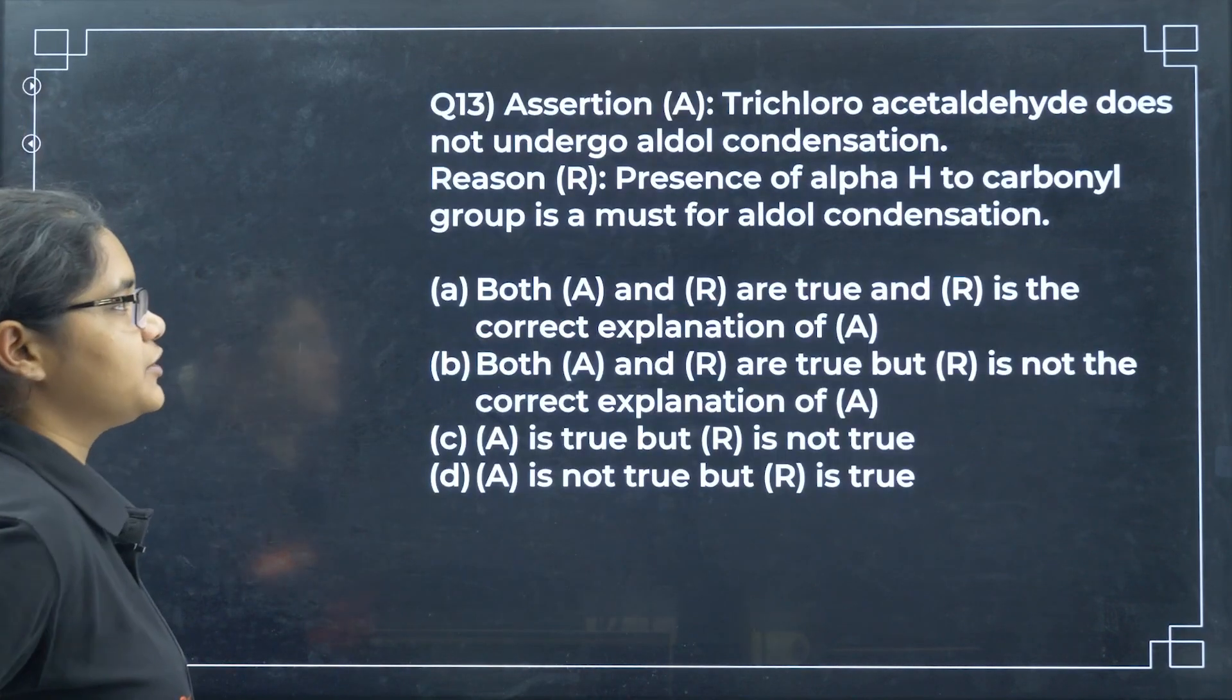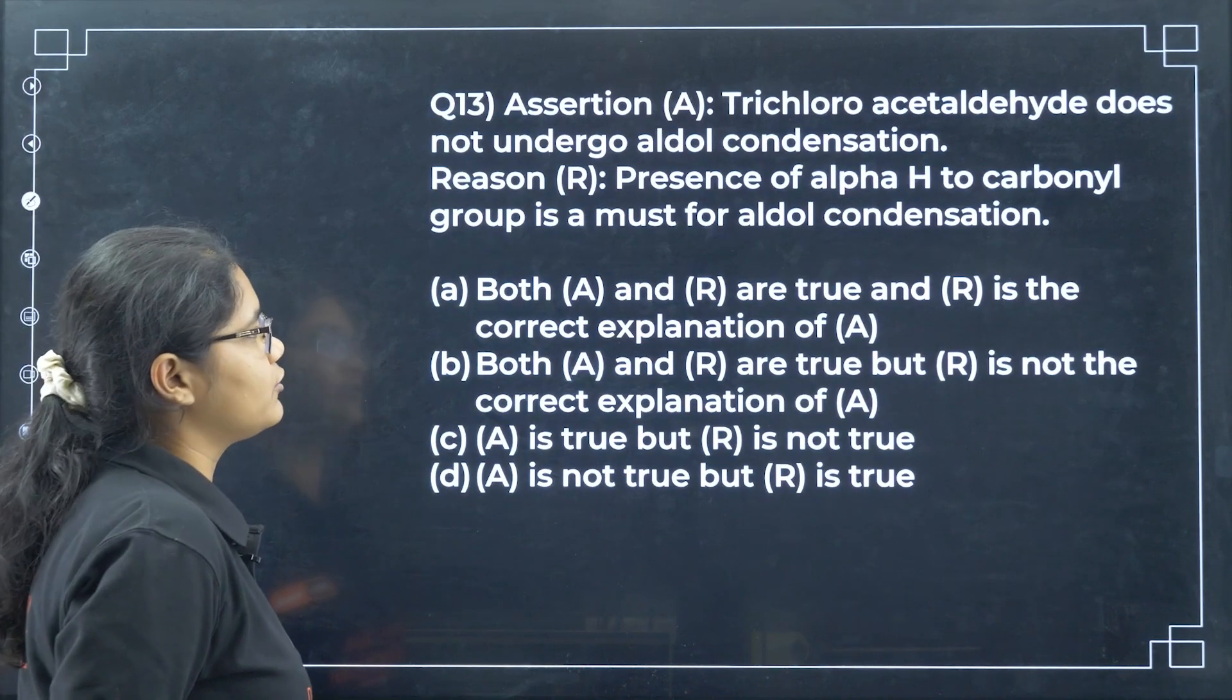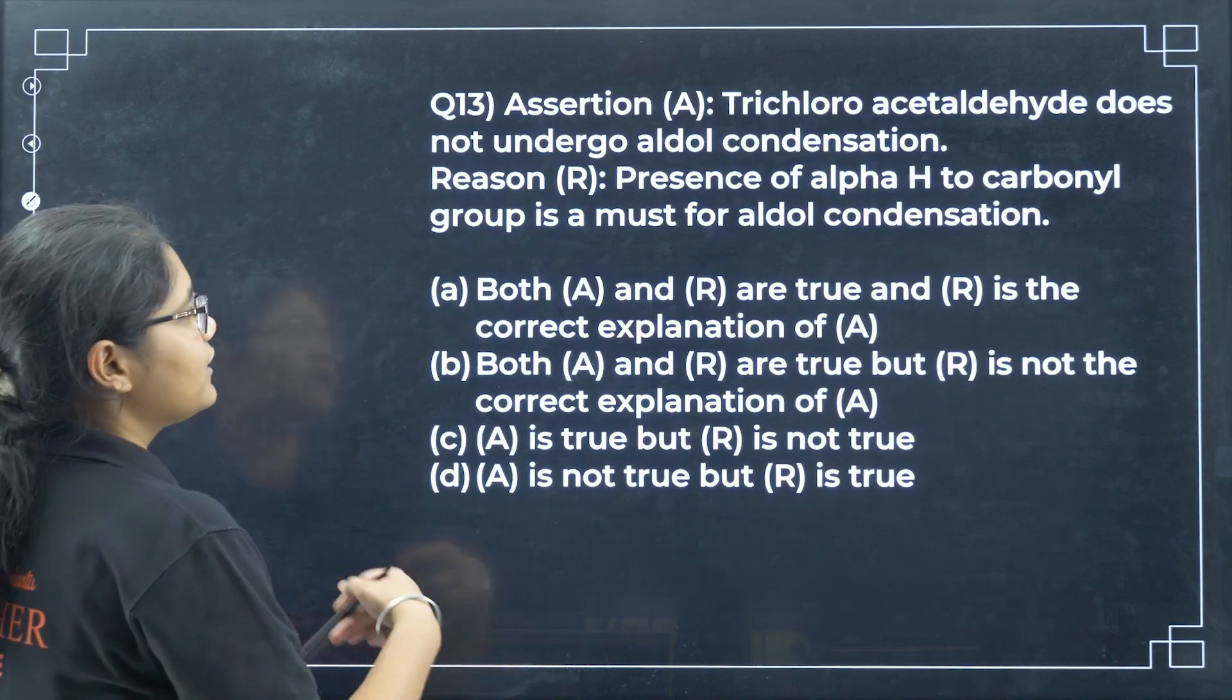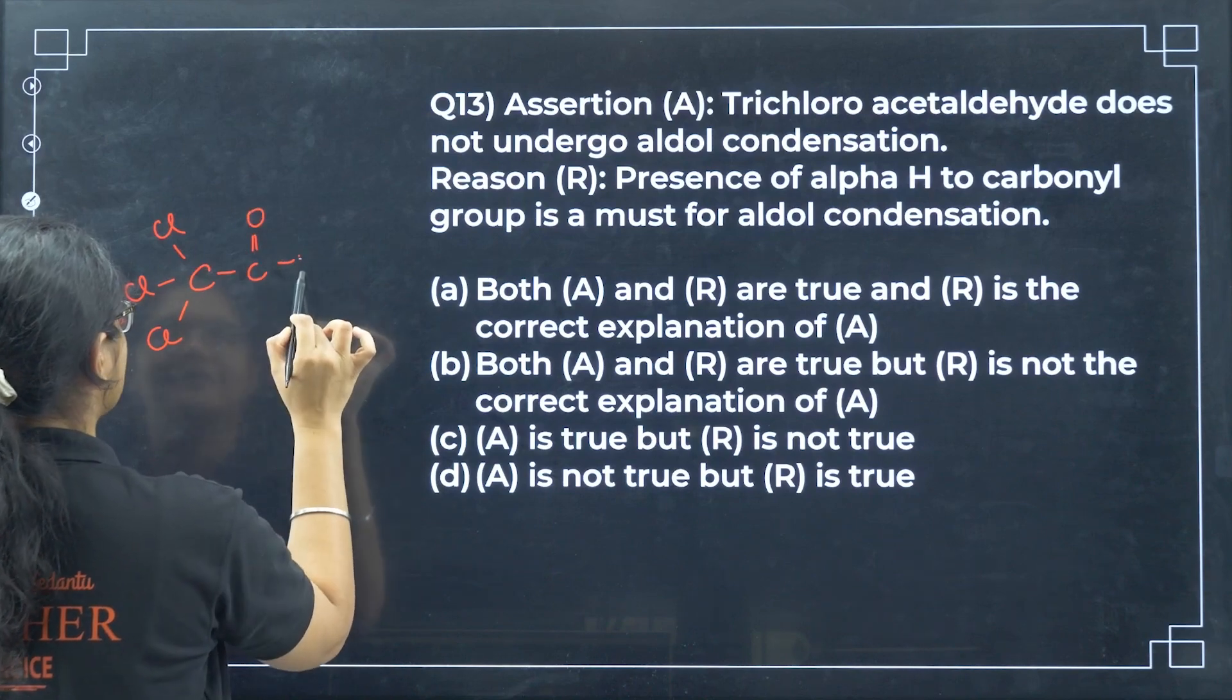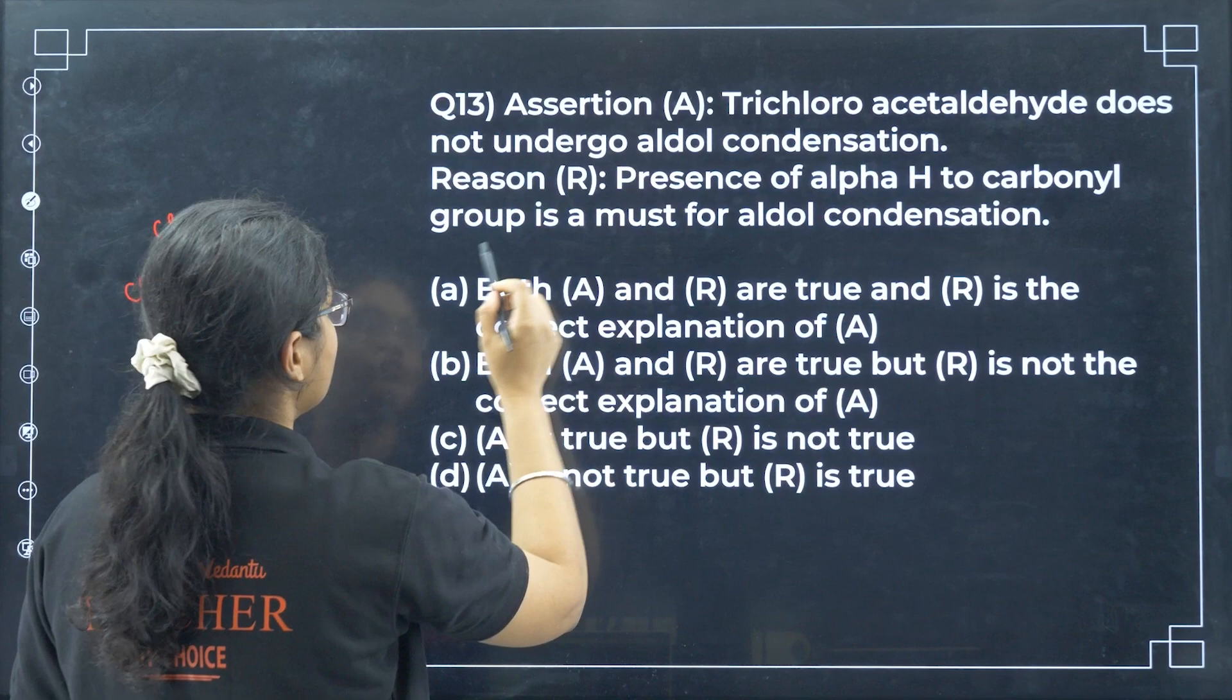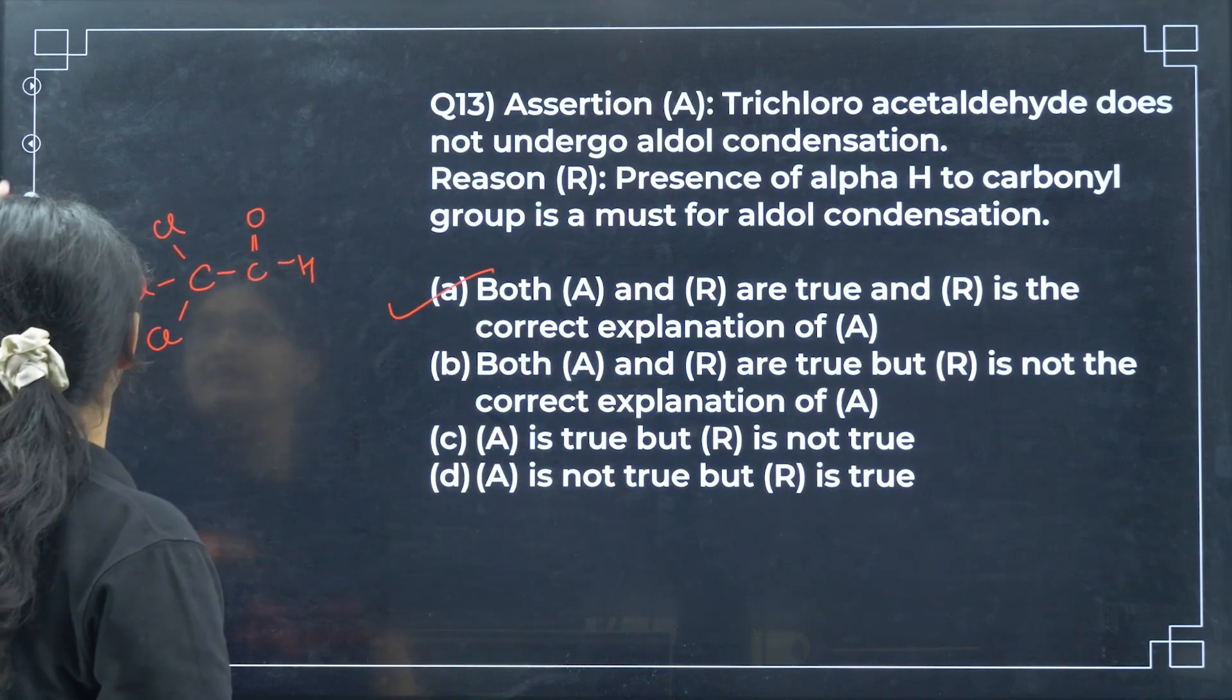Two molecules of acetaldehyde will react in aldol condensation. This one will connect here. I have told you how to draw the product. You have to remove hydrogen, break this bond and add a hydrogen here. So product will be CH3-CHOH-CH2-CHO. That's 1, 2, 3, 4. So it is 3-hydroxybutanal. Option B.